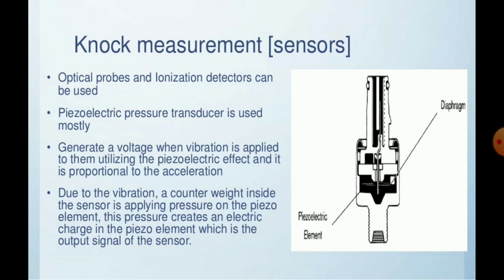Can we measure knocking? How can we sense it using sensors? Optical probes and ionization detectors can be used to measure the knocking phenomenon. Piezoelectric pressure transducers are sensors mostly used for knocking detection. They generate a voltage when vibration is applied, utilizing the piezoelectric effect, proportional to acceleration. Due to vibration, a weight inside the sensor applies pressure on the piezoelectric element, and this pressure creates an electric charge as the output signal of the sensor.